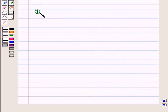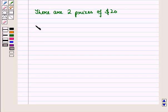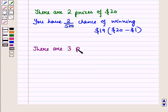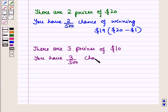There are two prizes of $20, so you have a 2/500 chance of winning $19, that is $20 minus $1 for the ticket cost. Then there are three prizes of $10, which means you have a 3/500 chance of winning $9, that is $10 minus $1.